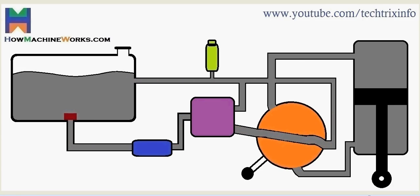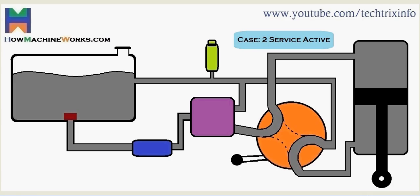In Case 2 we activate the lever so that the galleries of the valve block changes to service activation mode. So service is getting activated, so now let's see how it works.